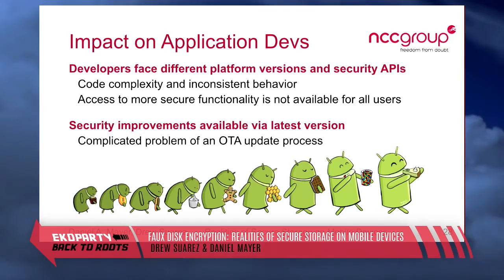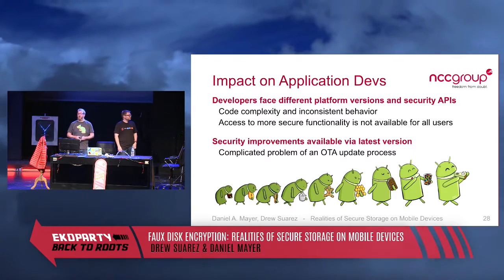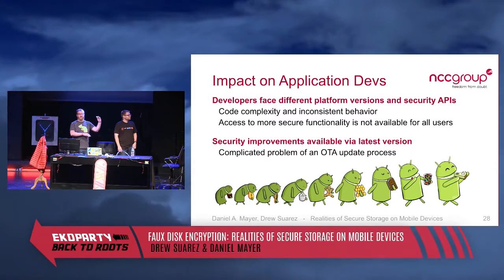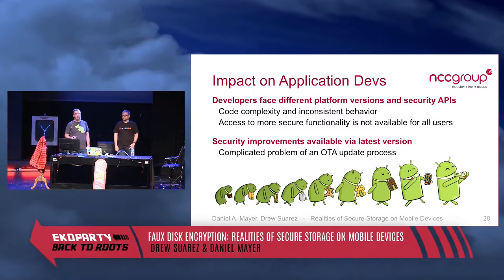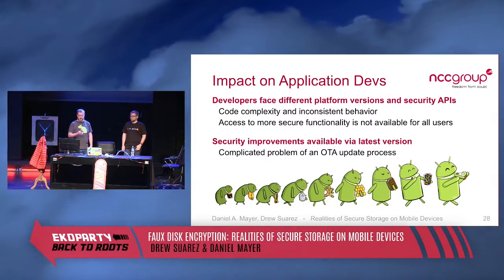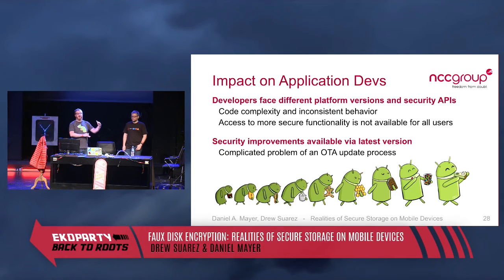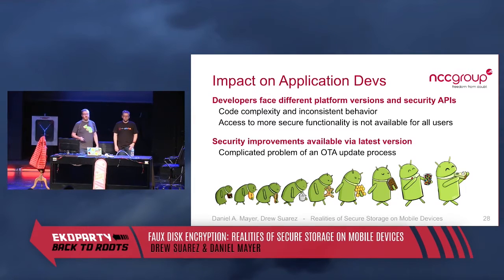This impacts application developers significantly. Different protections are available in different platform versions, leading to a giant if-def mess. If you're trying to do things properly, you check which version the app is running and make different security decisions based on that — creating enormous code complexity. In application reviews, there's always a massive section of 'if 4.2 do this, if 4.3 do this,' and mistakes are easy to make given the many esoteric problems that arise. Access to more secure functionality is simply not available to all users.